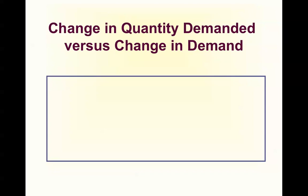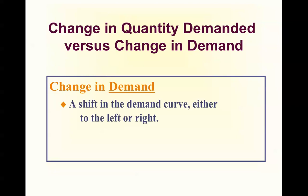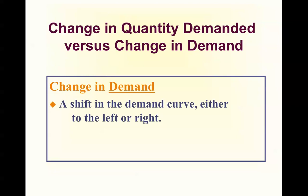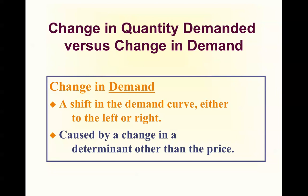First we'll look at a change in demand. A change in demand, unlike a change in quantity demanded, is a shift of the demand curve. The entire demand curve either moves to the left or to the right — we call that a shift. And it is caused by a determinant other than the price.